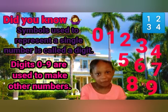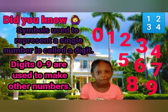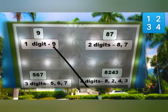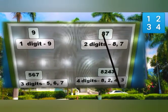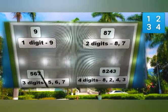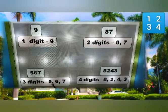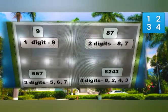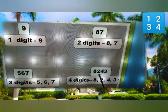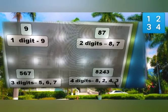Digits zero to nine are used to make other numbers. For example, nine is a one-digit number. Eighty-seven is a two-digit number — eight and seven. Five hundred sixty-seven is a three-digit number. Eight thousand two hundred forty-three is a four-digit number — eight, two, four, and three.